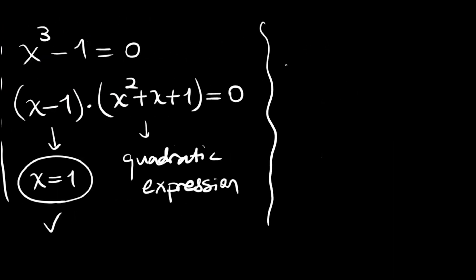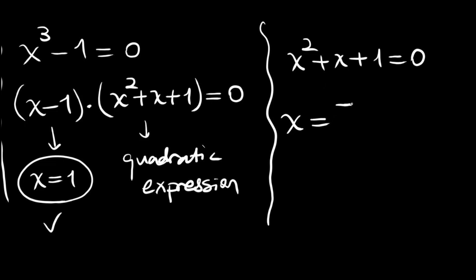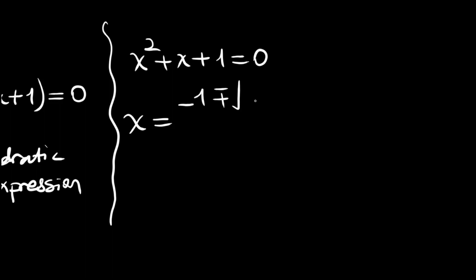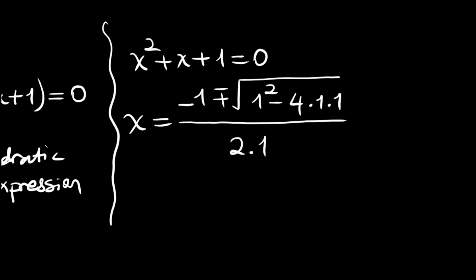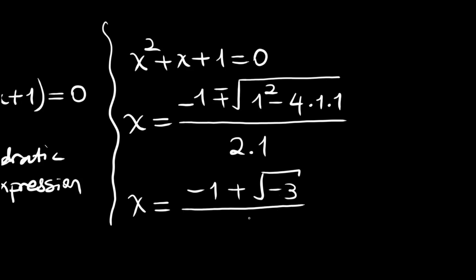We have to solve the equation x squared plus x plus one is equal to zero. Using the quadratic formula: x is equal to minus one plus or minus the square root of one squared minus four times one times one, divided by two times one. From this we have x is equal to minus one plus or minus the square root of negative three, divided by two.